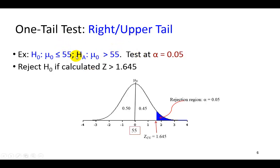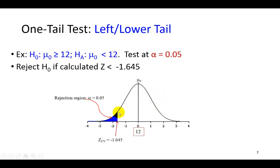For a one-tail upper-tail test, the null hypothesis is that the mean is less than or equal to 55. You have a right-tail test, so even if your sample mean x-bar is a little above 55 but within the margin of error, you would not reject the null hypothesis. You only do so if the calculated z-value lies in the rejection region — that is, greater than 1.645. On the other hand, with a lower-tail test and a critical value of negative 1.645, if the calculated z comes out less than negative 1.645, we reject the null hypothesis in favor of the alternative.